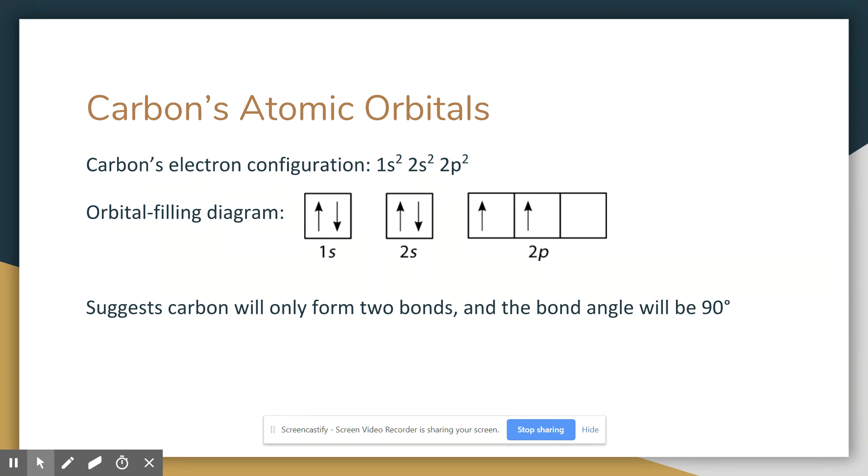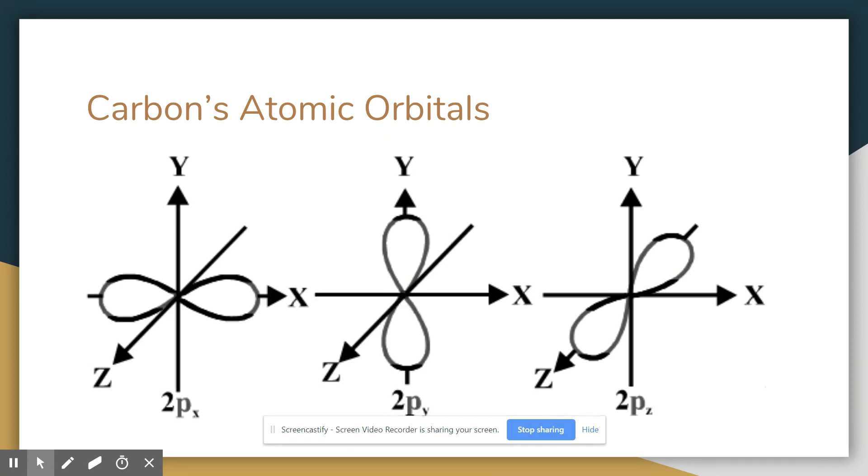Well, the p orbitals are where those unpaired electrons are. And the p orbitals, you'll remember, are along the principal axes in three dimensions, x, y, and z. That means any two p orbitals will be perpendicular to one another. And so, the bond angles that form should be 90 degrees.